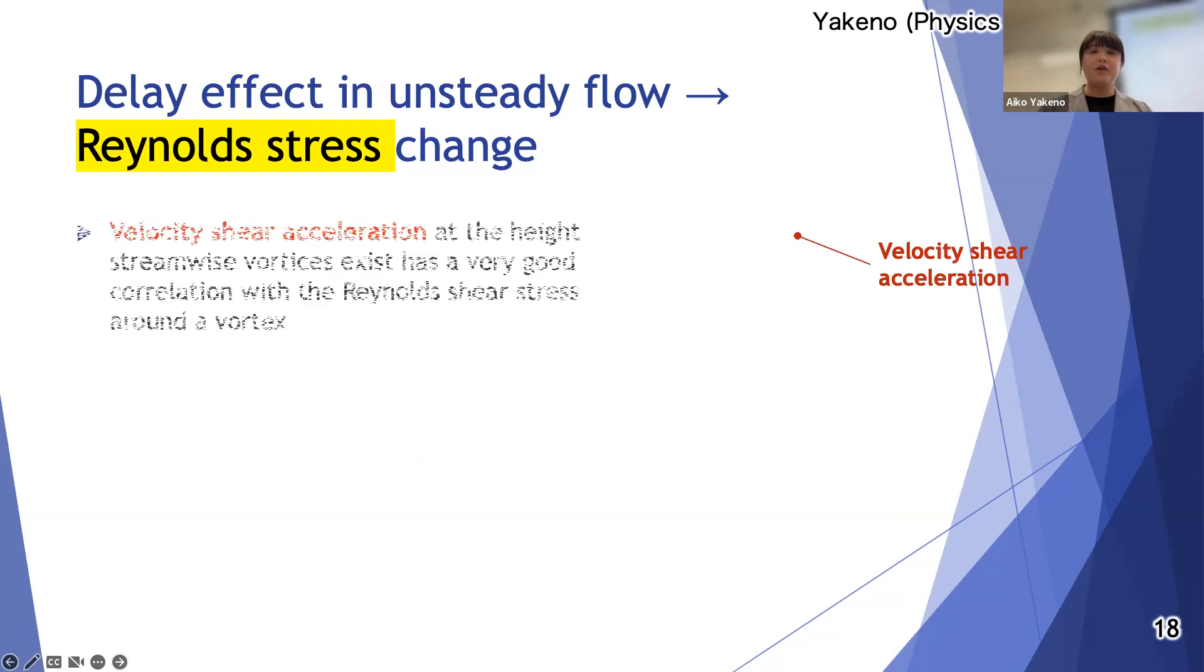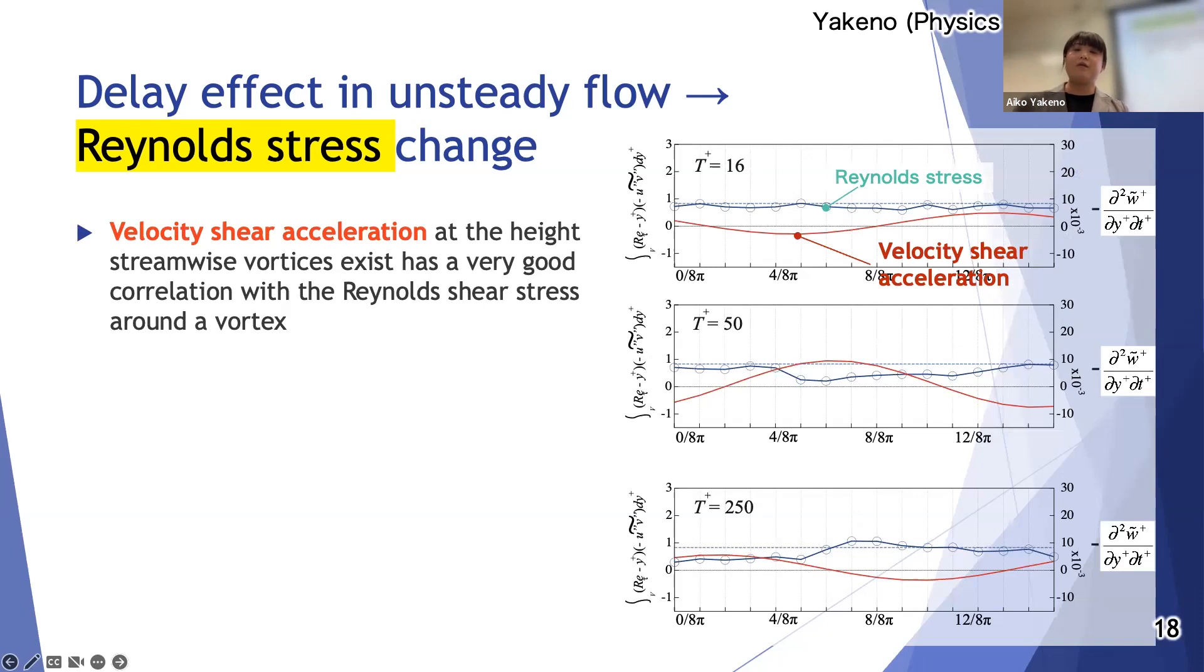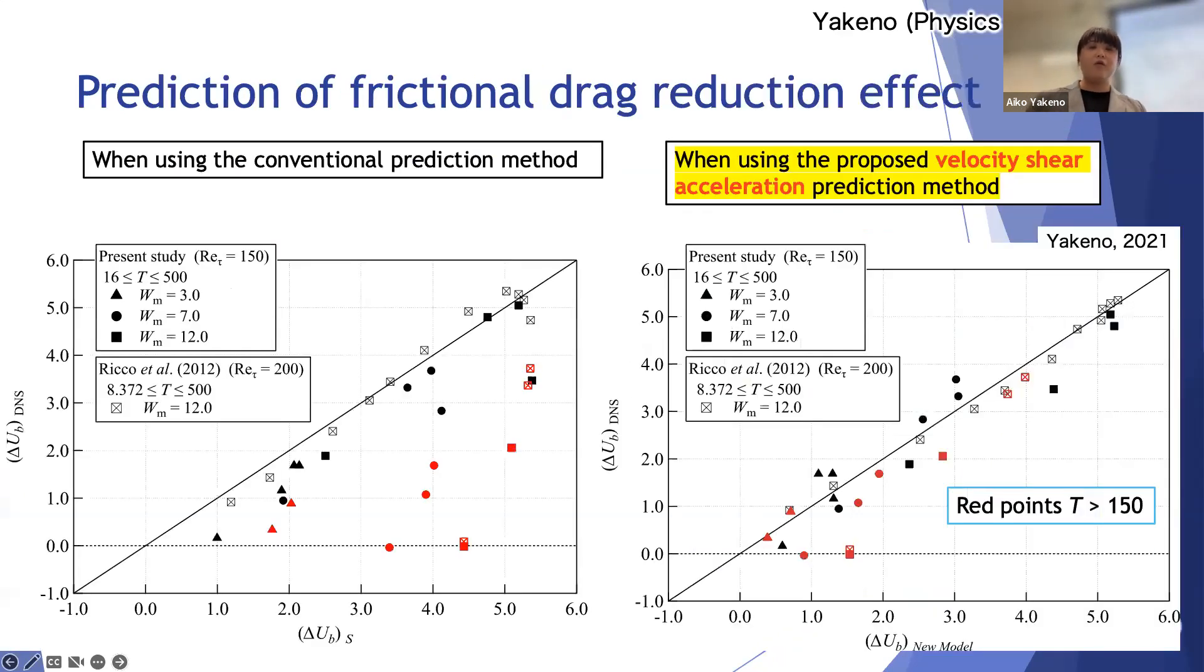Then I calculated and plotted the phase change in Reynolds shear stress and the velocity shear acceleration at the streamwise vortex. I found these are correlated very much, not only the peak phase but also the amount of reduction. That is very interesting.